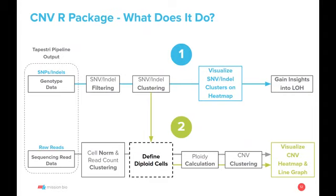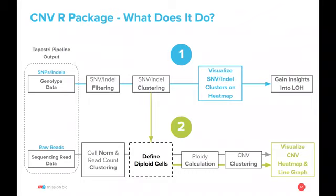Beginning with step one, using the genotype data we apply a set of quality filters to only include high-quality informative SNVs and indels. We then use that filtered information to cluster across all cells and visualize the data in heatmap format. We then interpret the genotype distribution across different cell populations, which allows us to: gain insights into LOH patterns, differentiate a normal diploid cell population from a potentially malignant tumor cell population, and associate molecular SNV data with structural CNV information. The second step integrates single cell genotype data with single cell read count data — instead of relying on raw read count information which can be noisy in single cell, we take advantage of high-quality genotype information to help calculate ploidy values and construct consensus single cell copy number profiles.